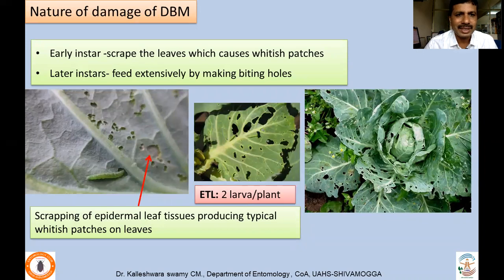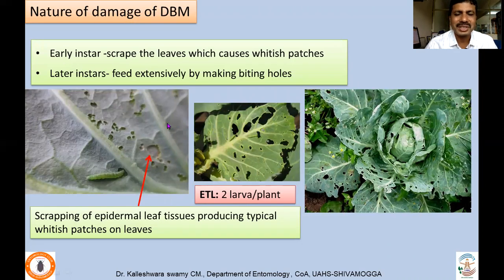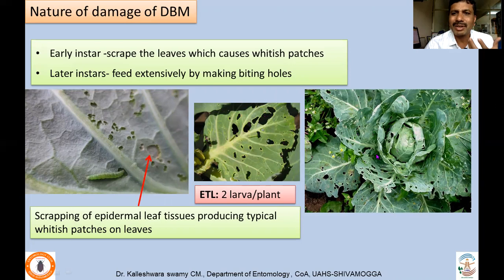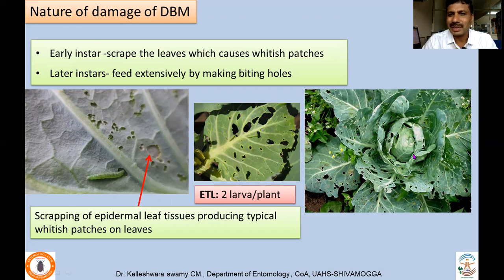Looking at the nature of damage: the early instars just scrape the leaves, resulting in whitish patches on the leaves, whereas later instars feed extensively by making holes. A large number of larvae actually create holes and the growth and development of the plant gets affected. The whole plant will consist of a lot of holes, making it less attractive in the market and unsuitable for marketing and consumption.